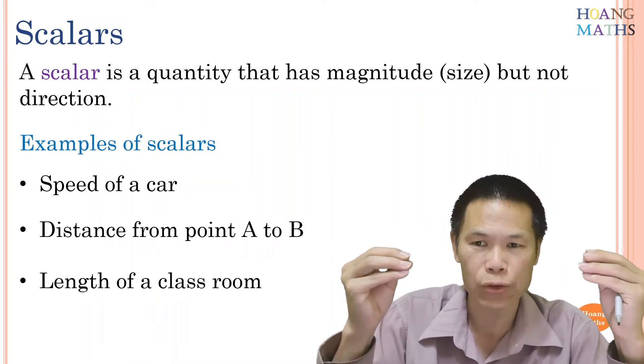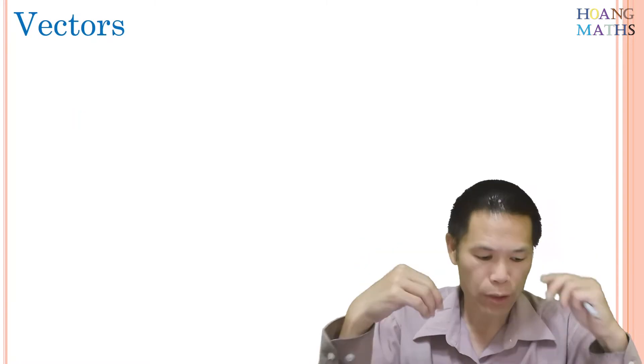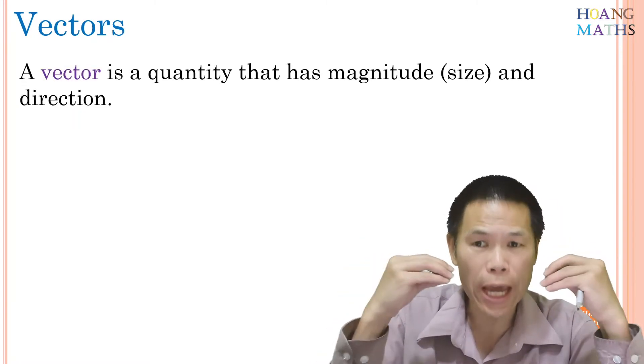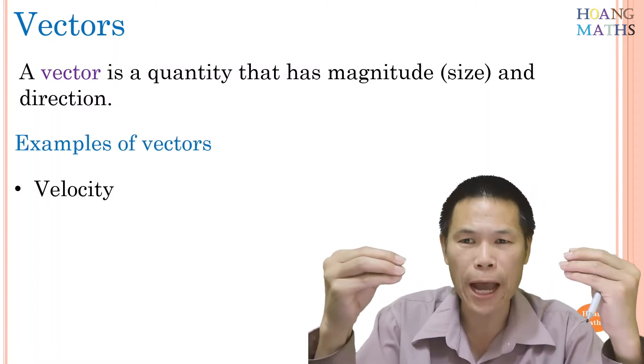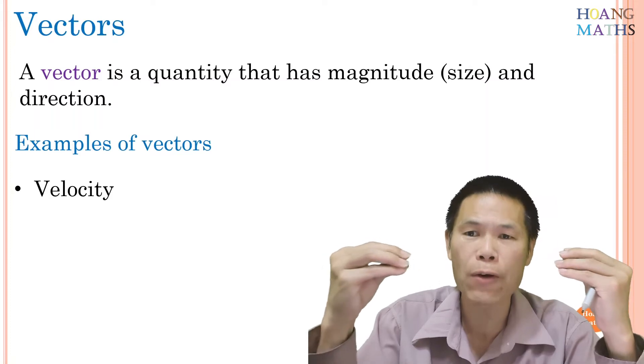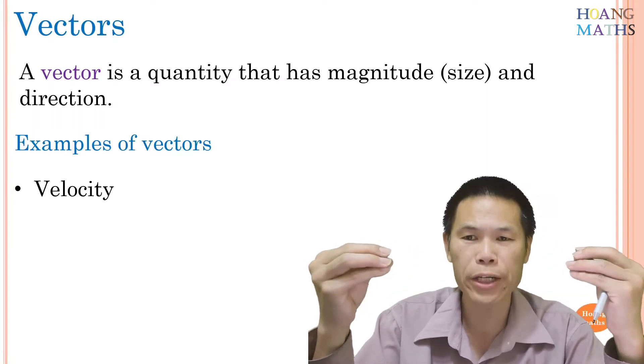So what is a vector? A vector is a quantity that has directions and magnitude. For example, velocity of a car - it is traveling at 80 kilometers per hour on a bearing of 120 degrees.